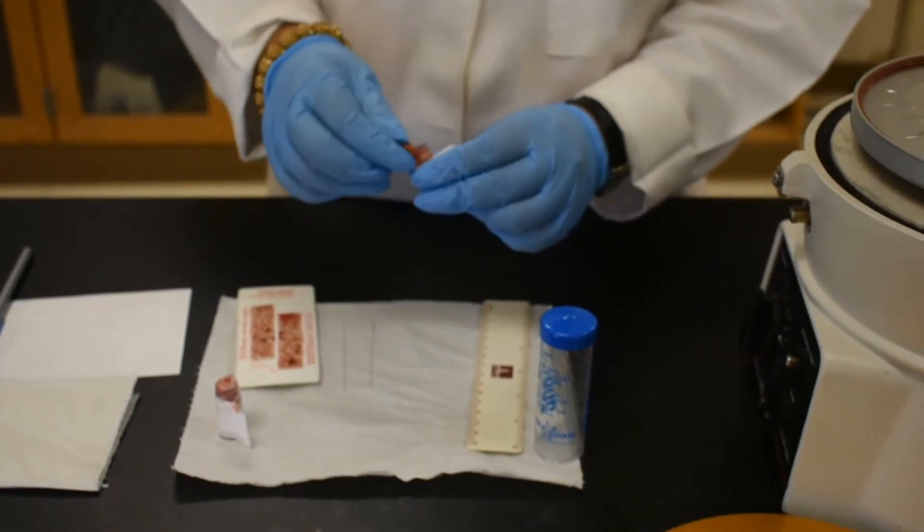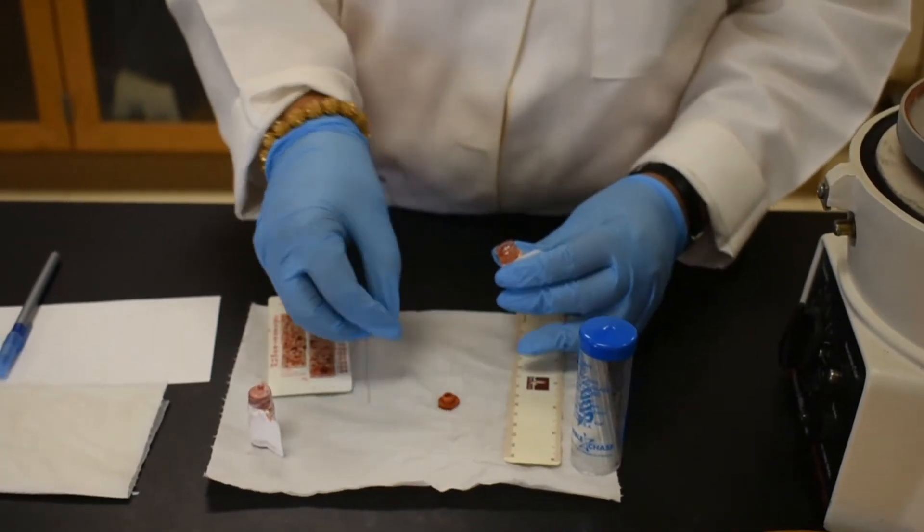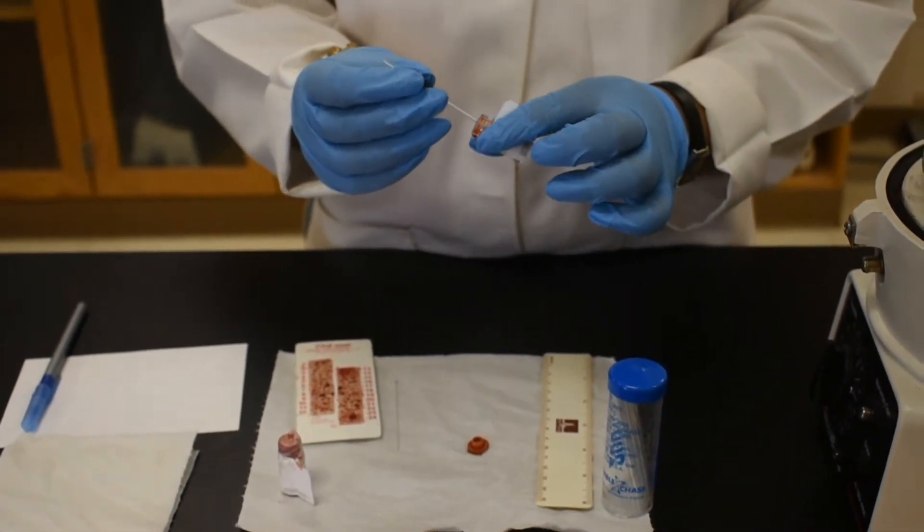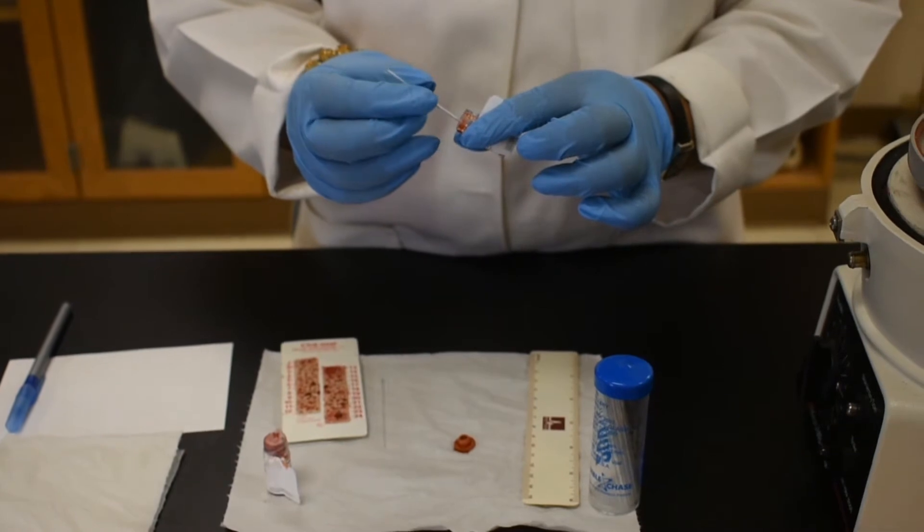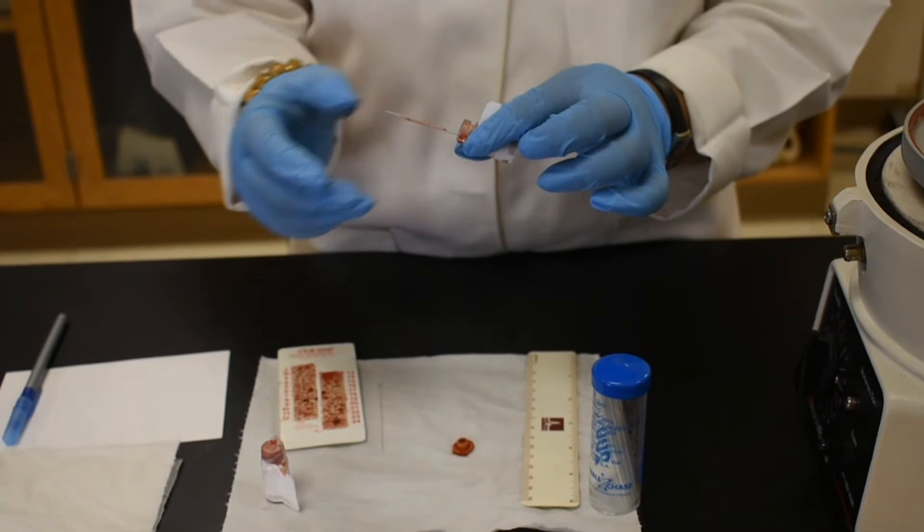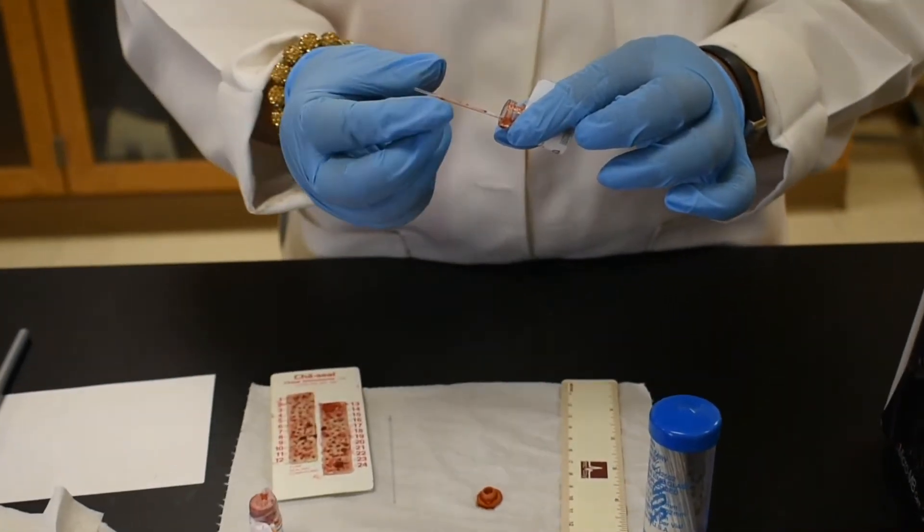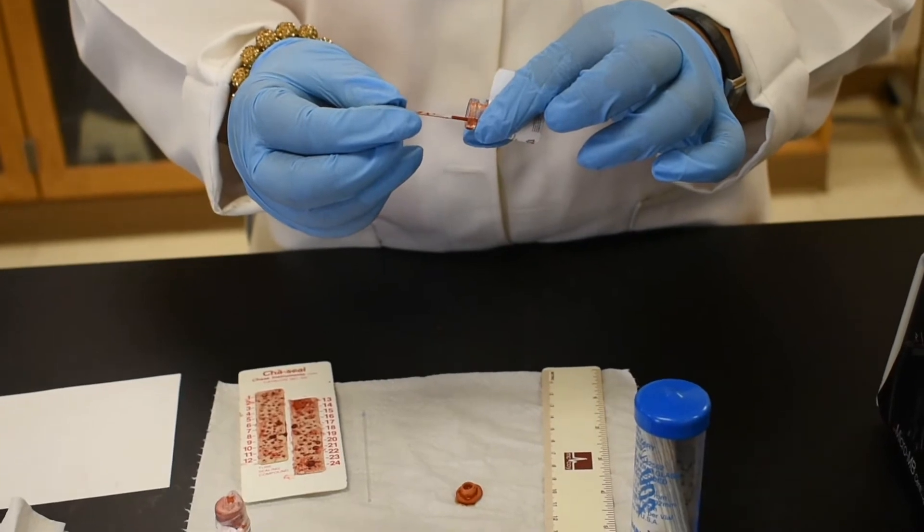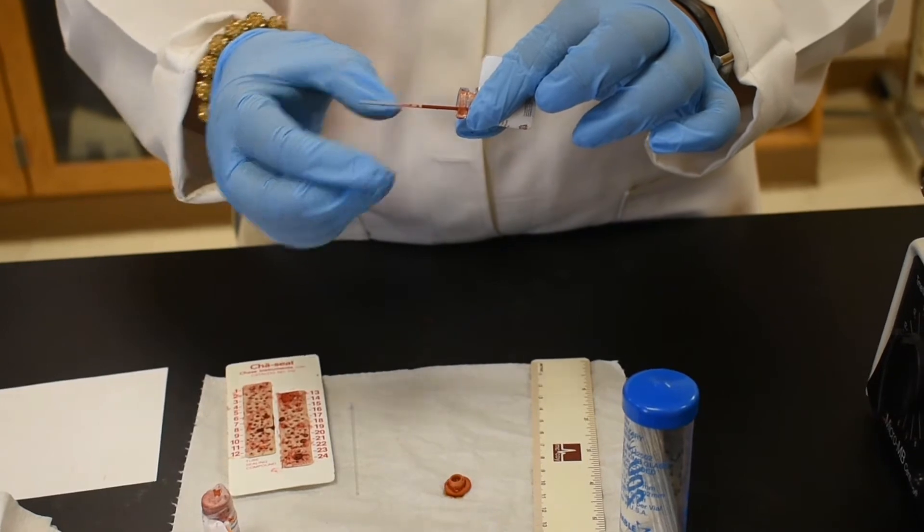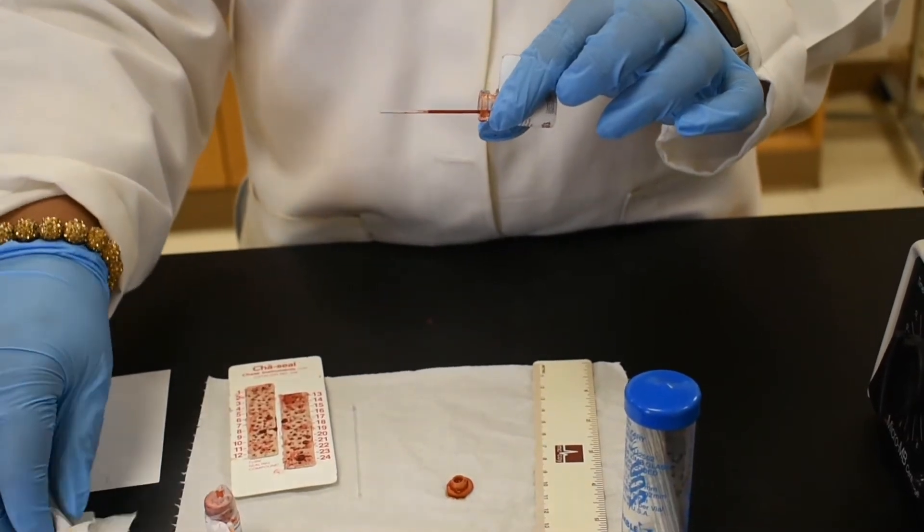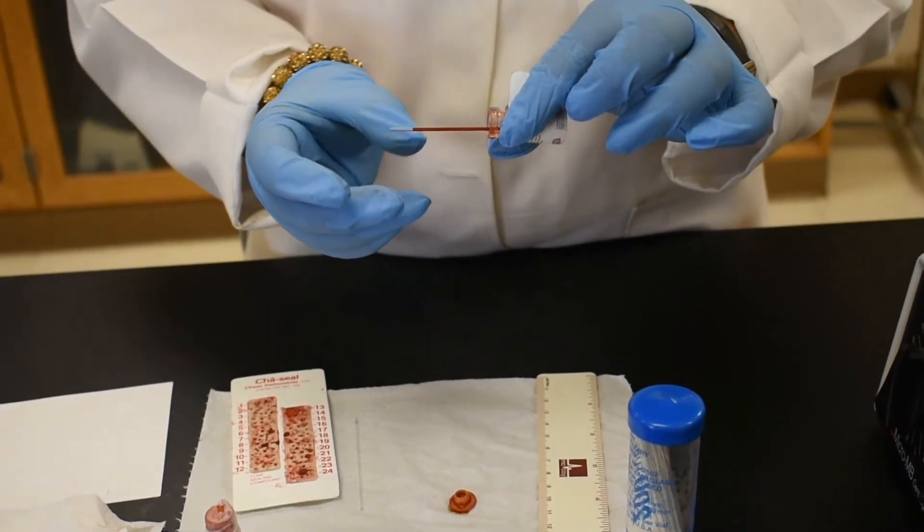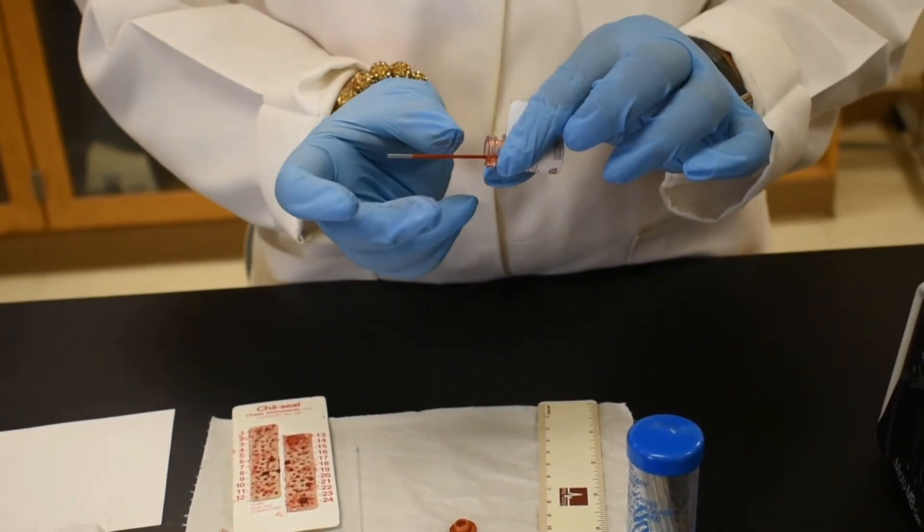Now we will draw the blood in the tube. The vial should be slightly tilted. And then you will see the blood will start coming through the capillary tube. This is called capillary action. We will go up to three-fourths. We will leave about half an inch from the top and stop.